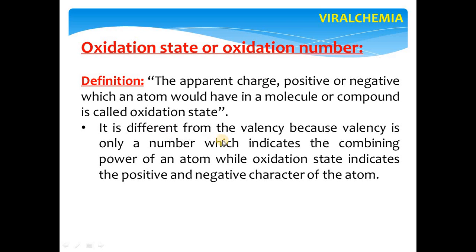Oxidation number is different from valency, because valency is only a number which indicates the combining power of an atom, while oxidation state indicates the positive and negative character of the atom. Students often confuse the two and intermix them — make it clear that valency and oxidation state are two different things. Valency is simply the combining power of an atom.